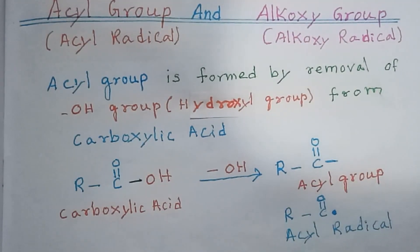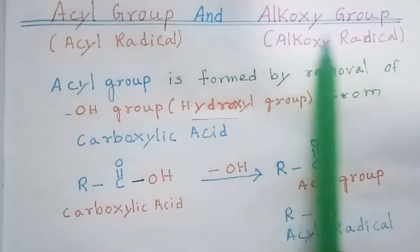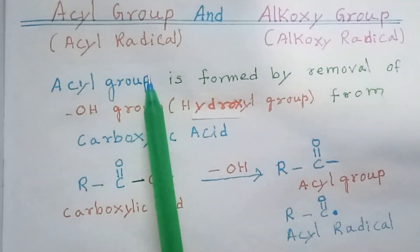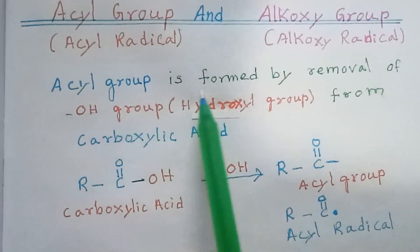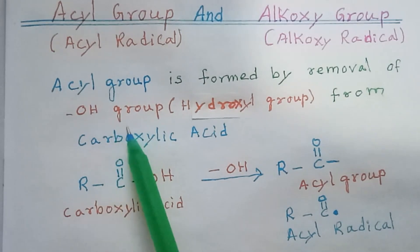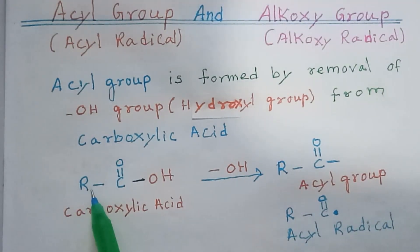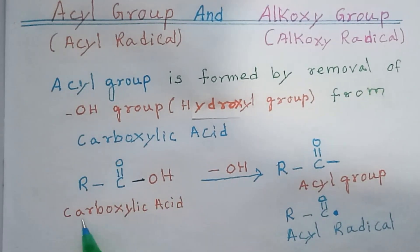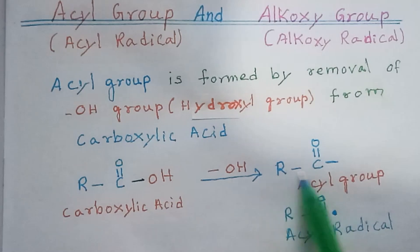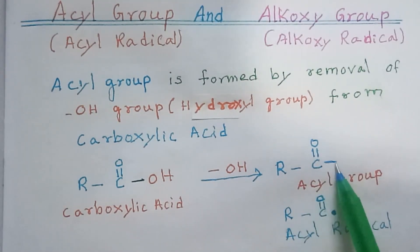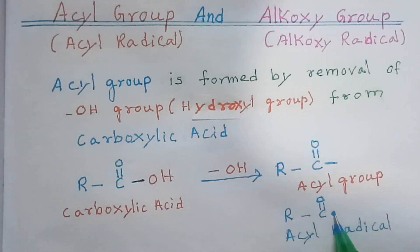In chemistry, we often come across terms like acyl group or acyl radical, and alkoxy group or alkoxy radical. An acyl group is formed by the removal of the OH group (hydroxyl group) from a carboxylic acid. RC double bond O-OH is a carboxylic acid; if OH is removed, it becomes RC double bond O with one free valence — this is the acyl group or acyl radical.